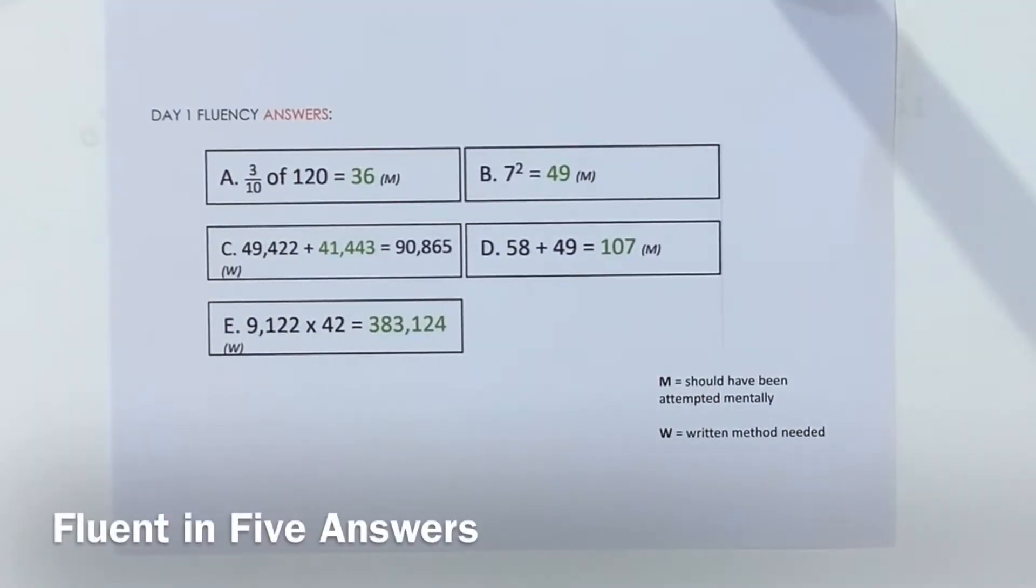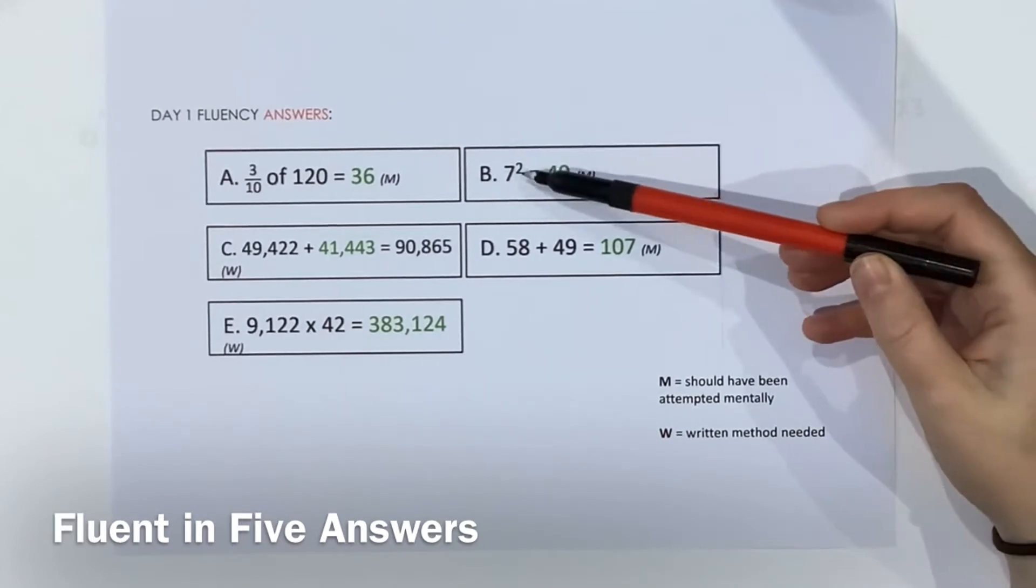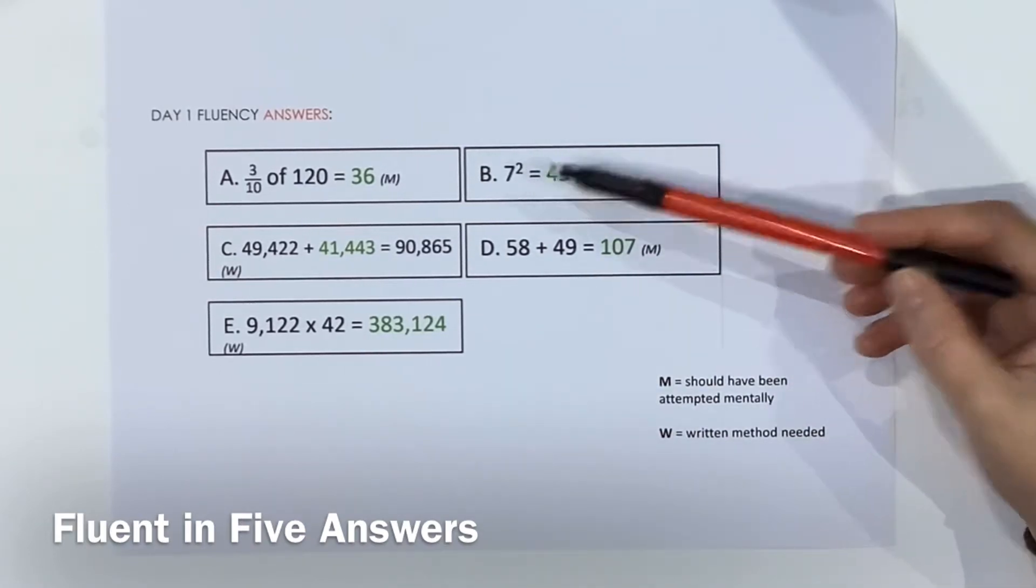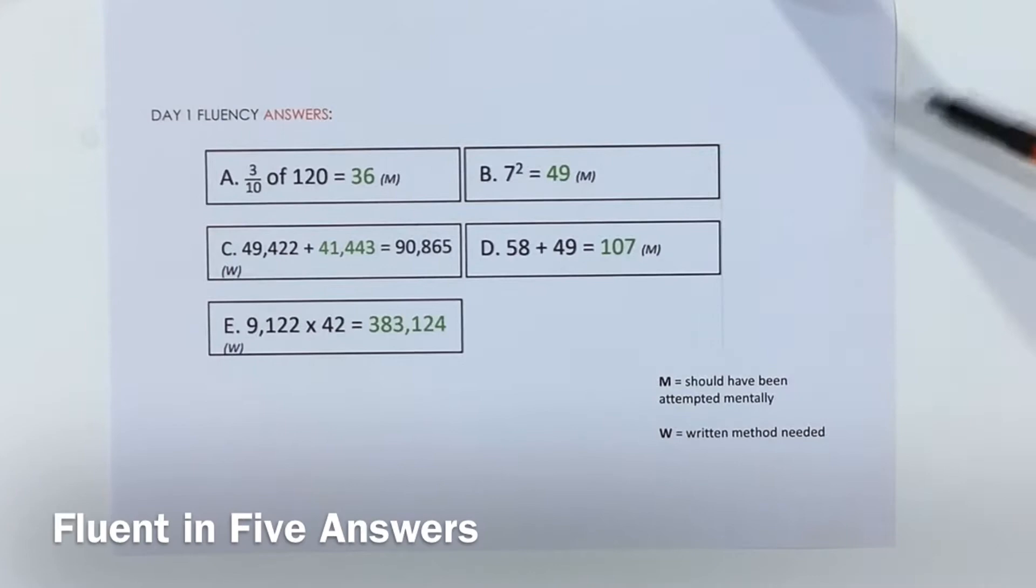Here are today's answers. A little recap for you. This little 2 here means squared, so 7 squared is 7 times 7. If it was a 3 that would be cubed which would be 7 times 7 times 7 and so on. So that might come up again this week, so a little reminder for you.